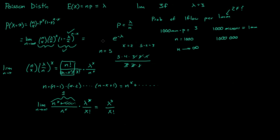So this entire equation simplifies to lambda to the power of x over x factorial. To rewrite that: for a Poisson distribution, the probability that x equals little x is equal to lambda — the expected value of x — to the power of x, times e to the negative lambda, all over x factorial.